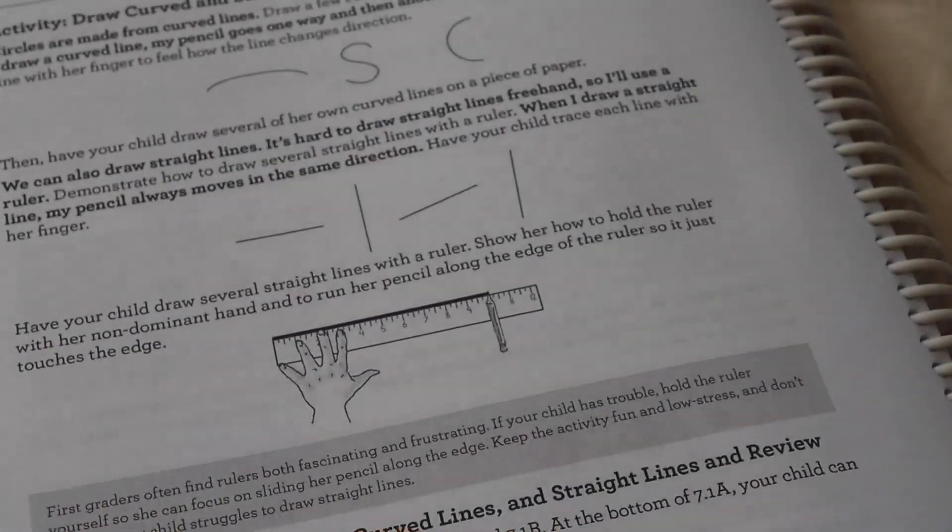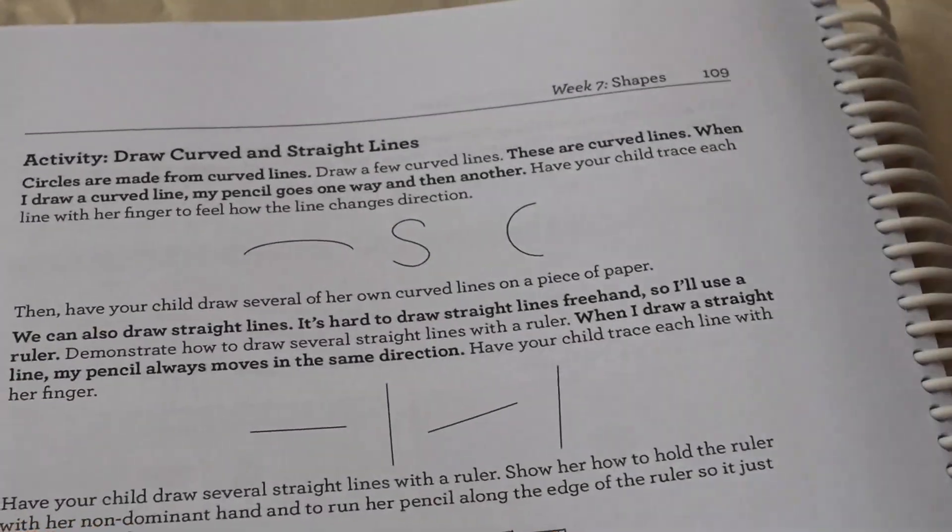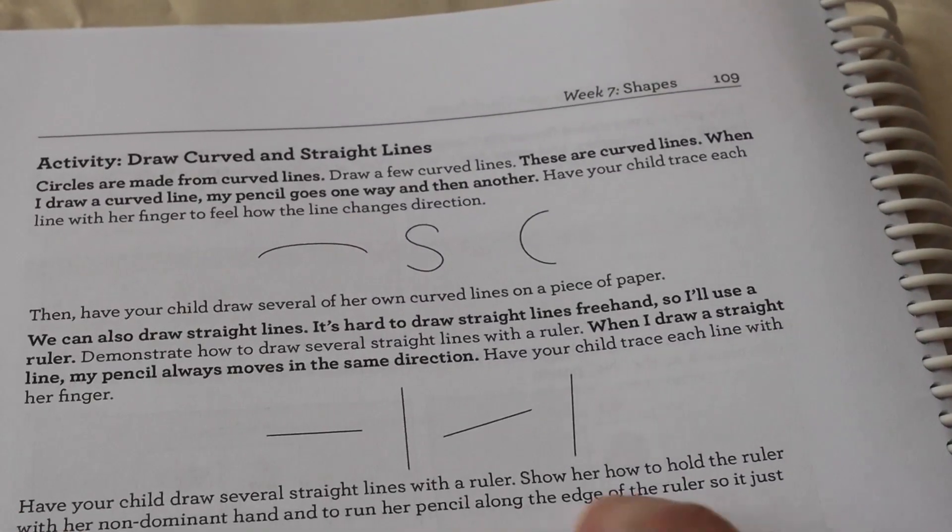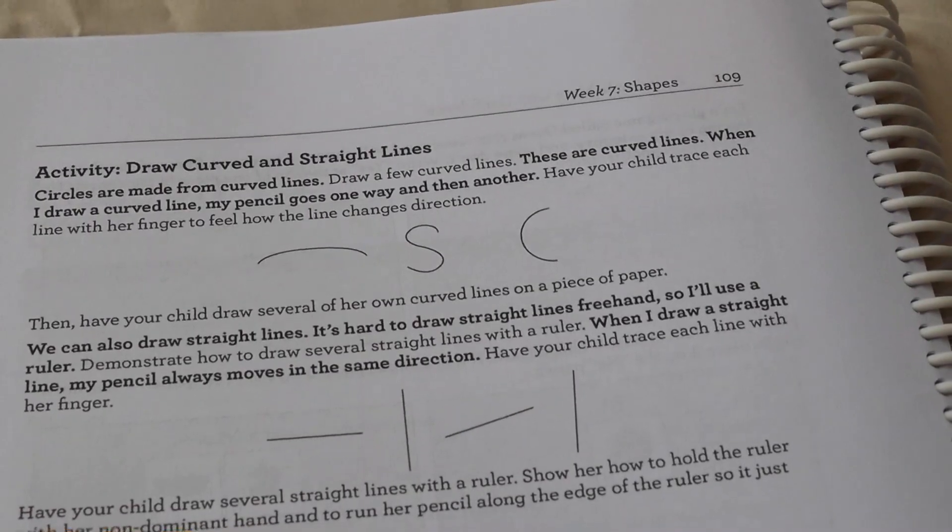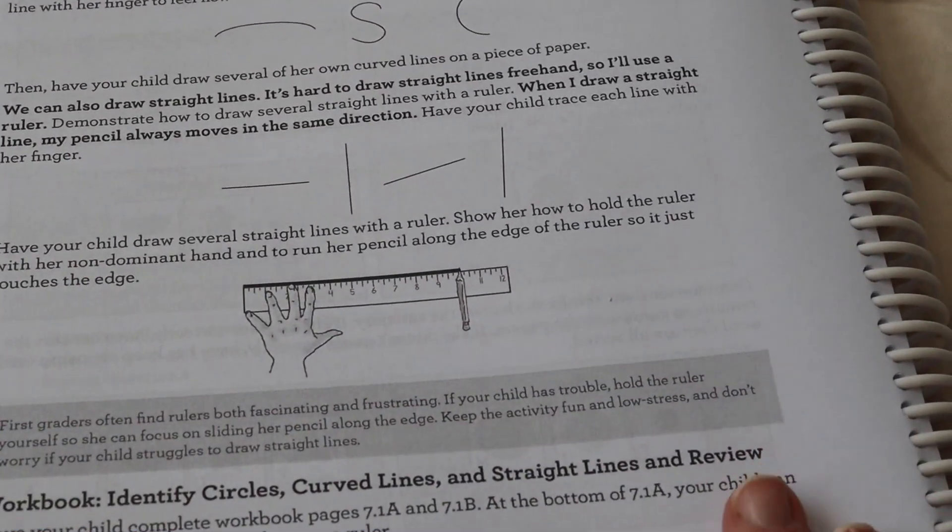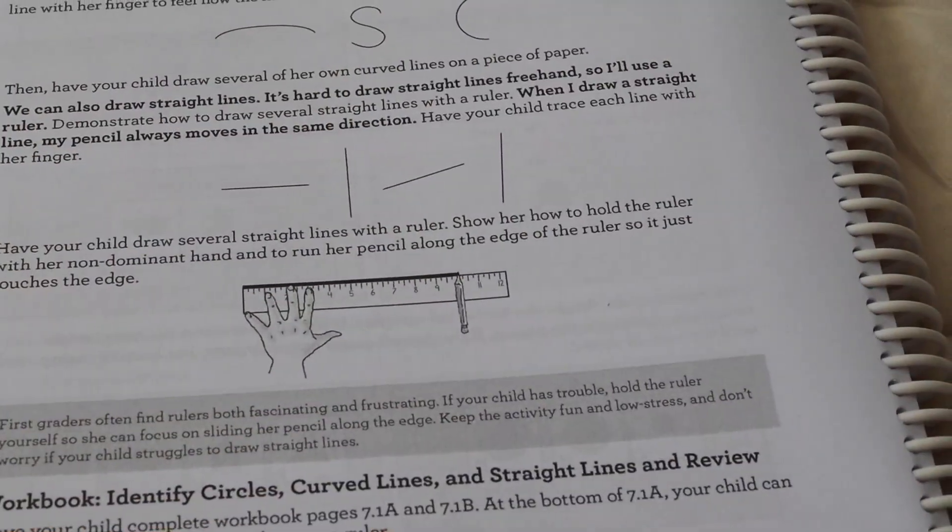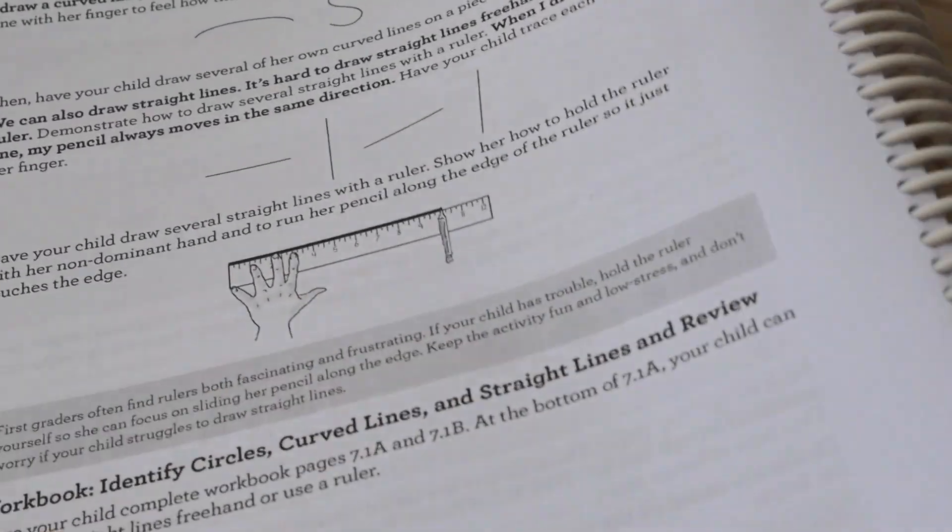So then we flip over to here and this is still, we're still working on the same lesson. So it says, you're going to draw curved and straight lines. So this is something that you're going to focus on with your child next. And then once you've done all that, then you're going to get the workbook.